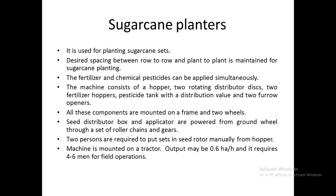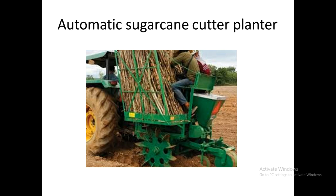The next type is the sugar cane planter. Seeds for sugar cane are called sets, and plant-to-plant or hill-to-hill spacing must be maintained in the field. The machine consists of a hopper, two rotating distributor discs, two fertilizer hoppers, a pesticide tank with distribution valve, and two furrow openers, all fitted to a frame with two wheels. The seed distributor box and applicator are powered from the ground wheel through roller chains and gears.